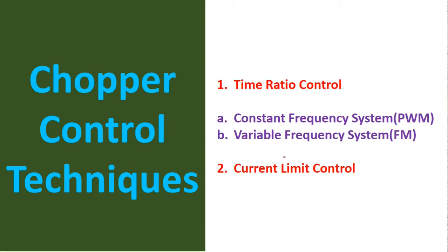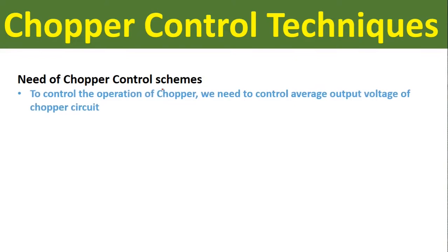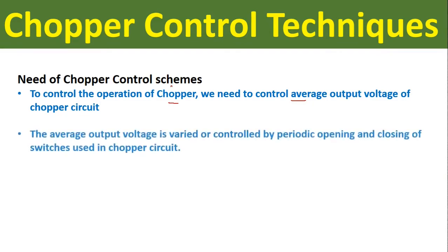Under time ratio control we have two types: the first one is constant frequency system, which is also called pulse width modulation control, and the second one is variable frequency system, which is also called frequency modulation control. Now let us see the need of chopper control techniques. To control the operation of the chopper, we need to control the average output voltage of the chopper circuit.